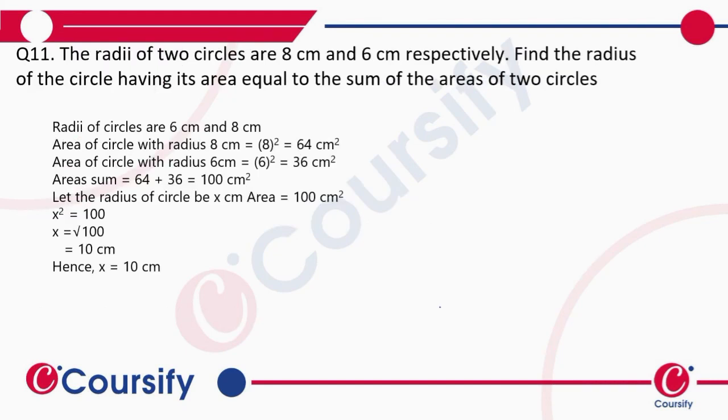The radii of two circles are 8 centimeters and 6 centimeters respectively. Find the radius of the circle having its area equal to the sum of areas of these two circles.